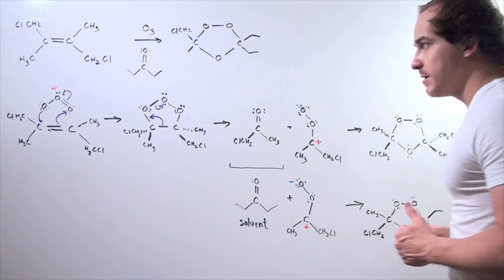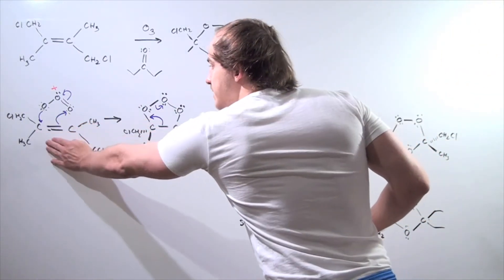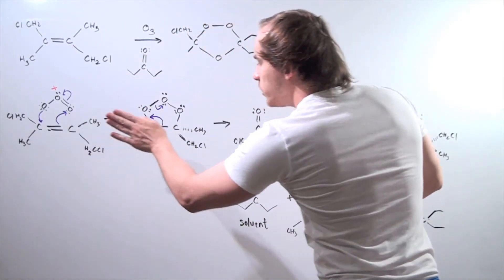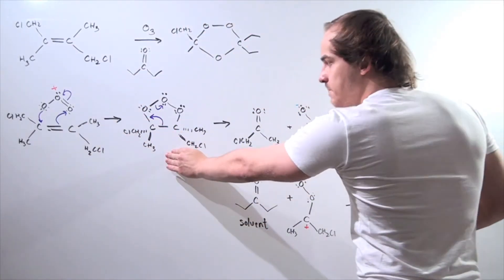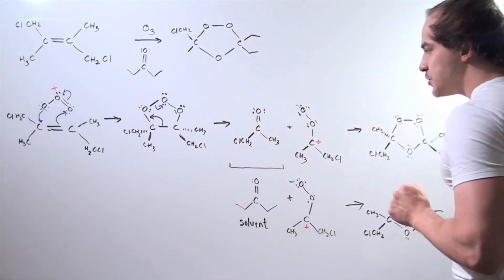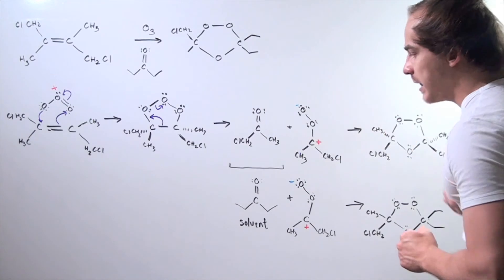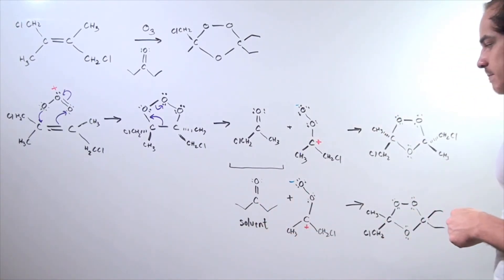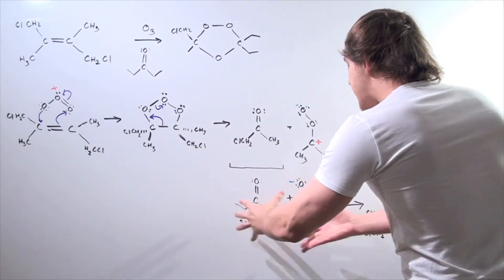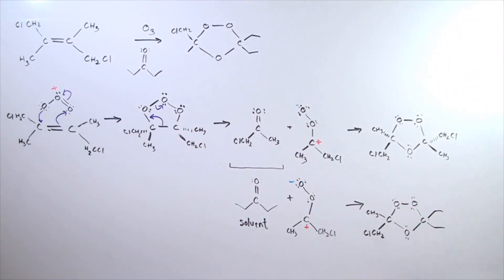We begin with these two reagents, with the ozone and ketone. We go to our primary ozonide, then we go to these two reagents. Now, instead of this molecule, this will participate because it's the one that predominates, it's the solvent, they mix and form our final product.